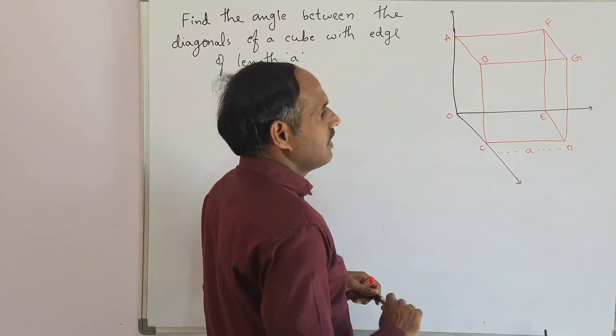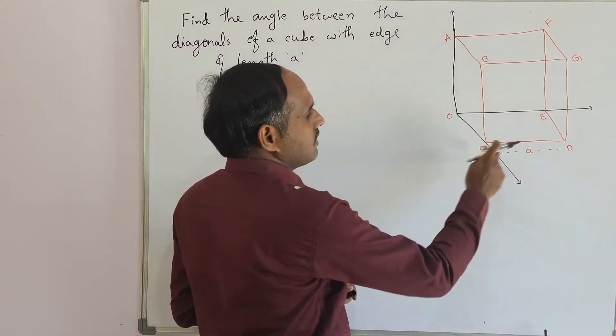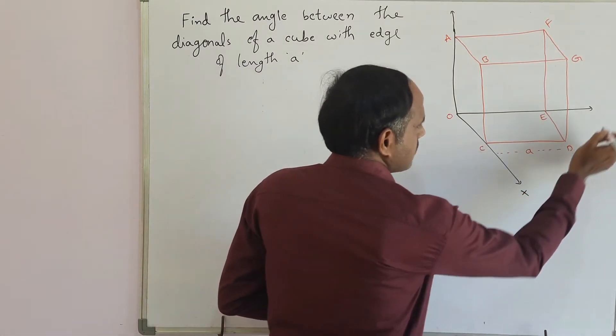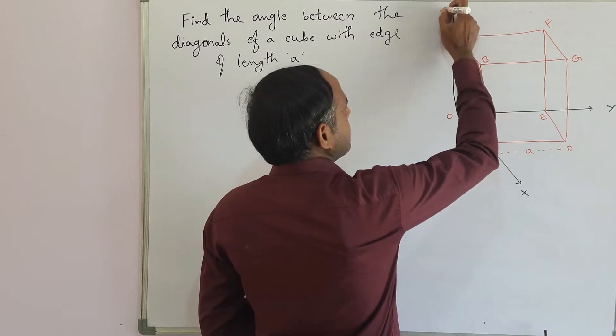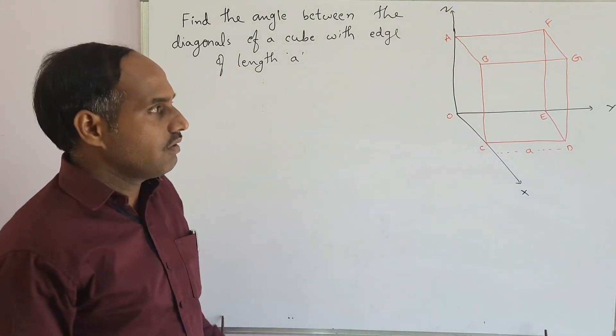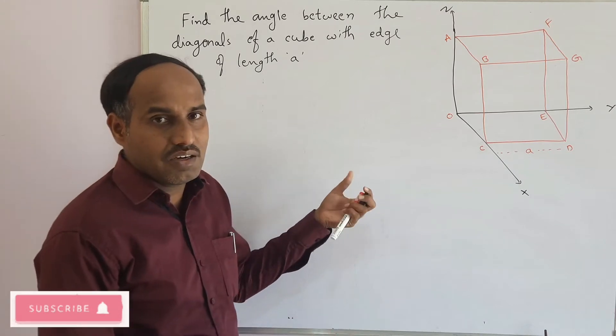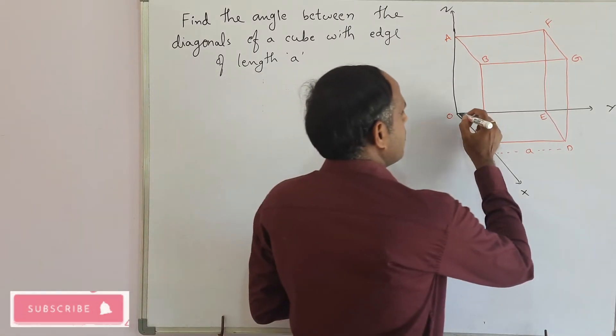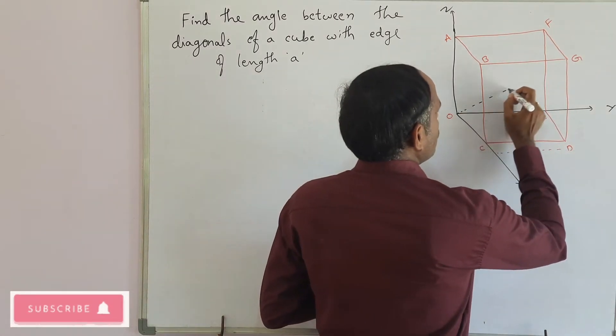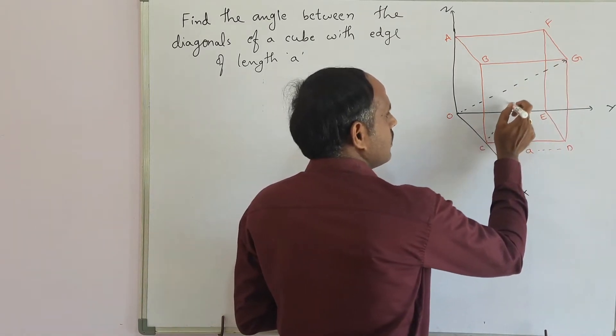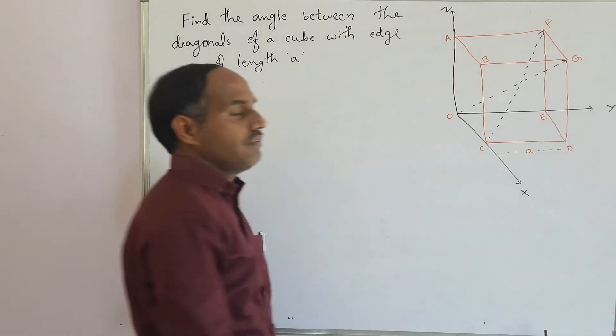In this curve, here I am considering a simple cube O, A, B, C, D, E, F, G in a plane of X, Y and Z axis. Here we need to find the angle between the diagonals. We are taking the body diagonals of a cube. We will get one diagonal which is from O to G as D1 and another diagonal from C to F as CF.